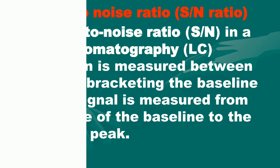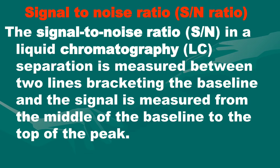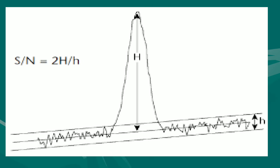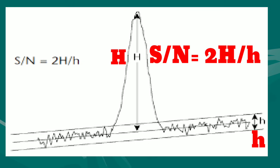Next is signal to noise ratio. The signal to noise ratio in liquid chromatography separation is measured between two lines bracketing the baseline, and the signal is measured from the middle of the baseline to the top of the peak. In this figure, you can see how to calculate the signal to noise ratio. The formula of signal to noise ratio is equal to 2H / N.